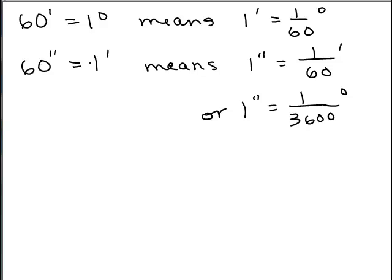And then if there are 60 seconds in one minute, then that means one second is just a 60th of a minute. So here's the last part, but if one second is a 60th of a minute, and a minute is a 60th of a degree, then one second is 1/3600th of a degree, because you would do 1/60 times 1/60 to get our answer.